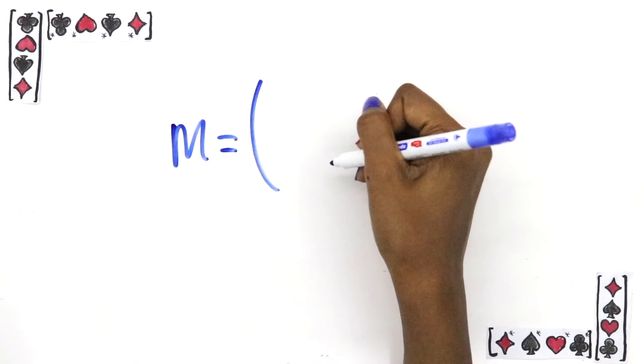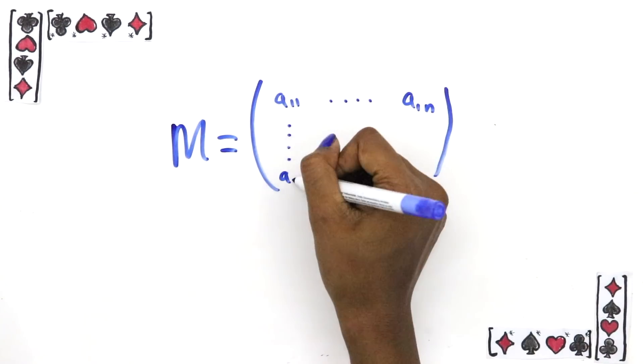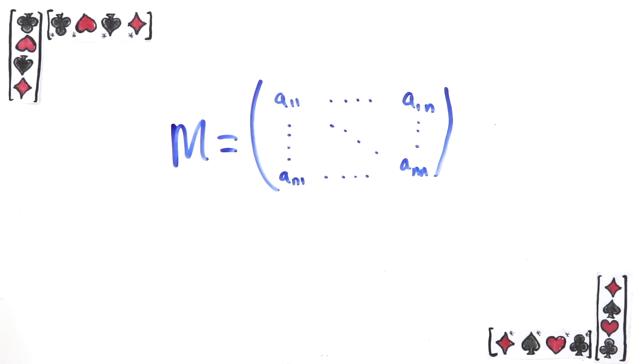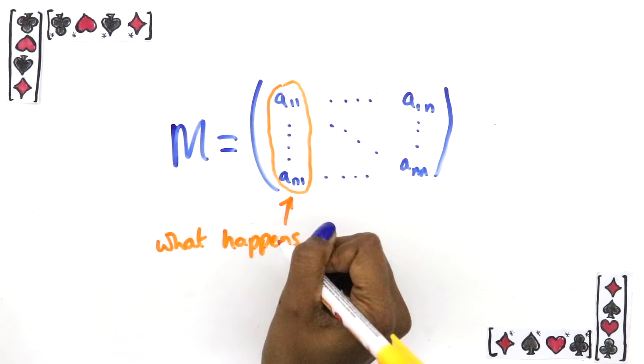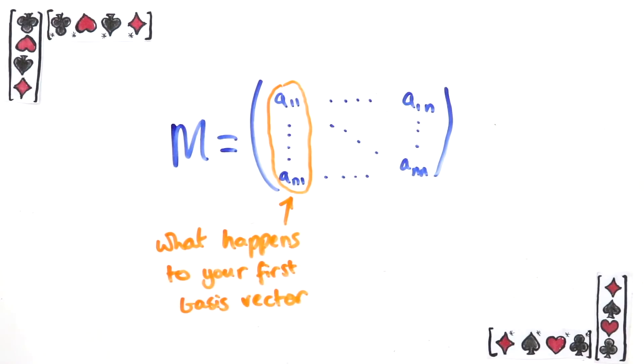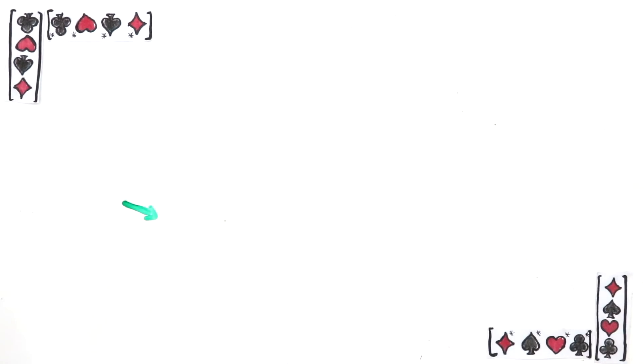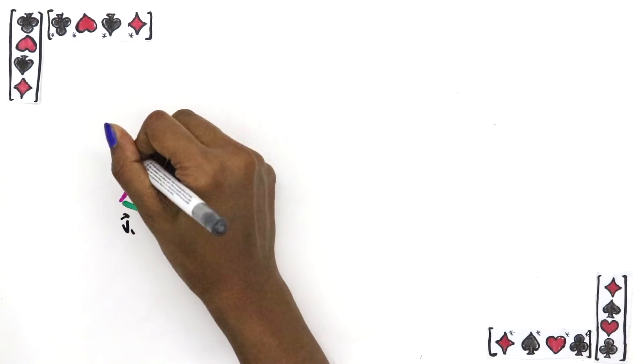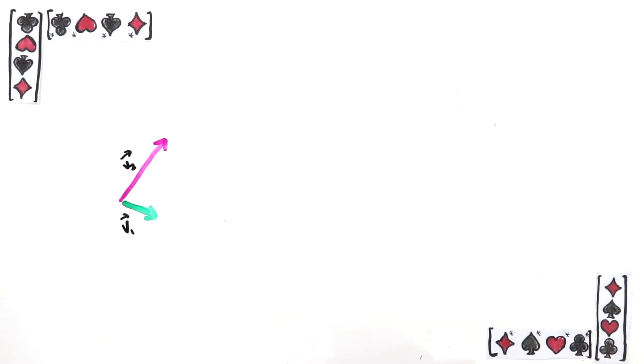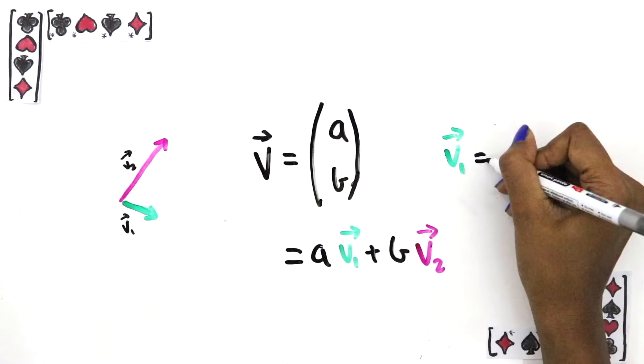So now we get to writing a matrix as an array. What you'll see is the first column represents what happens to your first basis vector, the second what happens to your second basis vector, etc. Remember how to write vectors as columns in some basis? It's a shorthand for writing out this linear combination of basis vectors. Then clearly the basis vectors are written like this.